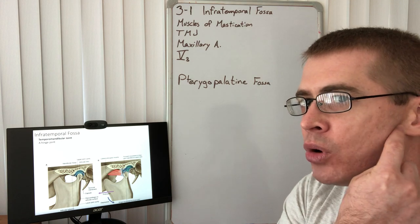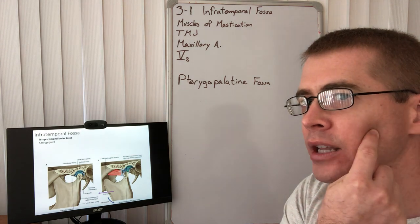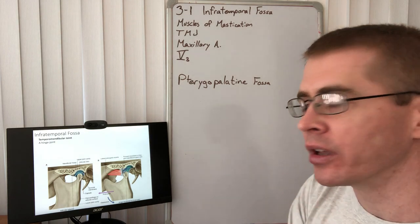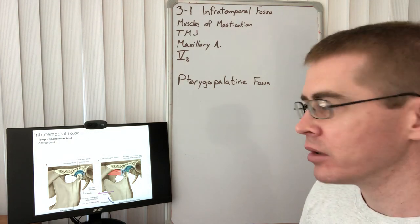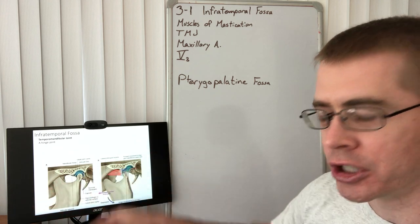So lateral pterygoid is pulling the jaw forward and in that process opening the mouth, lowering the jaw. So it's actually a motion of protrusion.